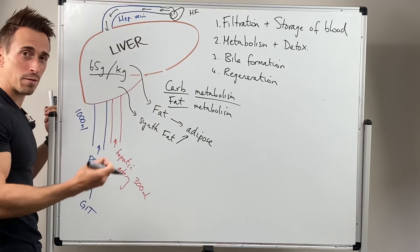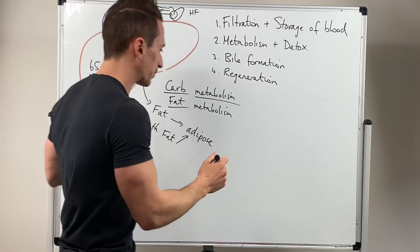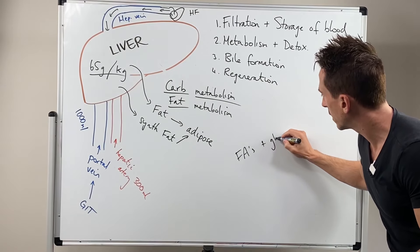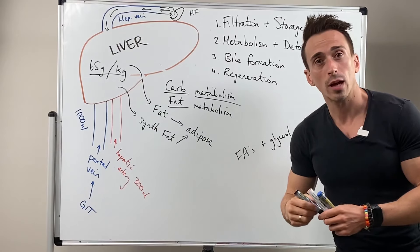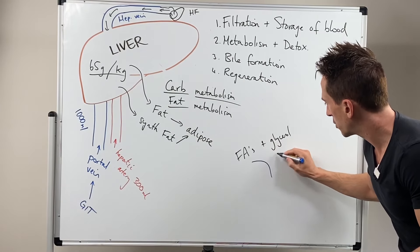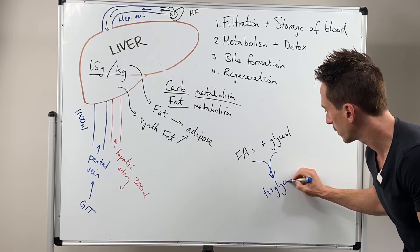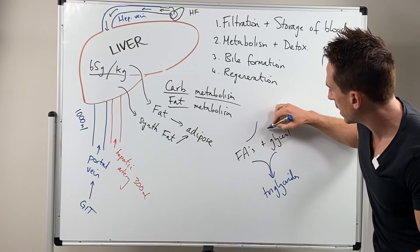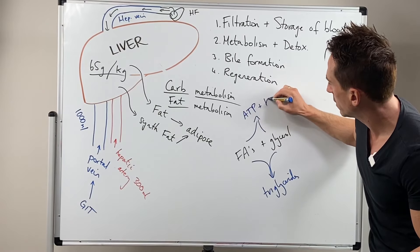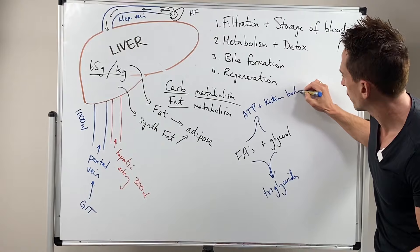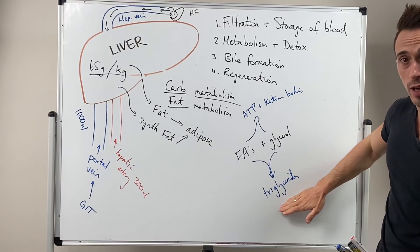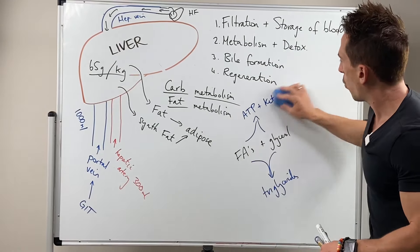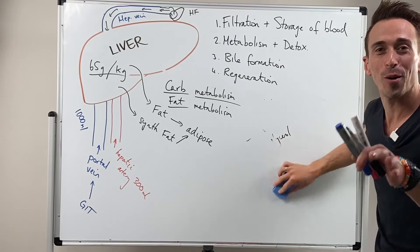In fat metabolism, the liver takes fatty acids and glycerol and can do a couple of things: it can combine them into triglycerides for storage in adipose tissue, or it can convert them into ATP and ketone bodies for energy utilization. So one pathway is storage and the other is energy production.